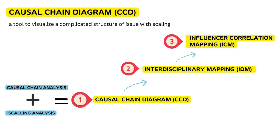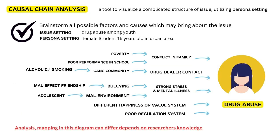Hello! This time we will study causal chain diagrams. A causal chain diagram, or CCD, can be converted into interdisciplinary mapping and influencer correlation mapping. These diagrams help you to visualize your research plan, especially to identify your hypothesis. Let's begin!